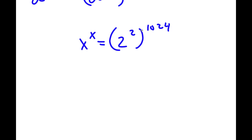2 to the power of 2 is simply equal to 4. So now I have x to the power of x is equal to 4 to the power of 1024.